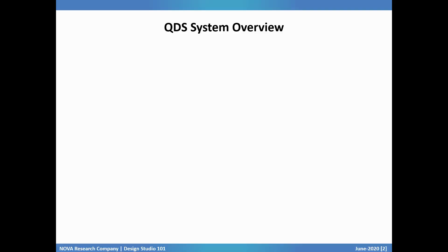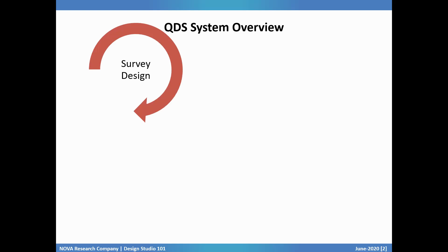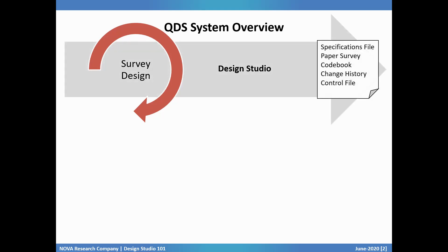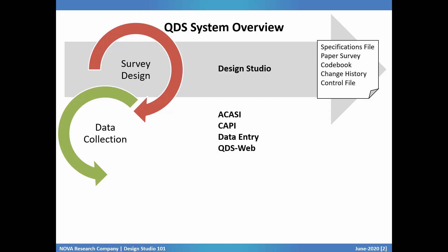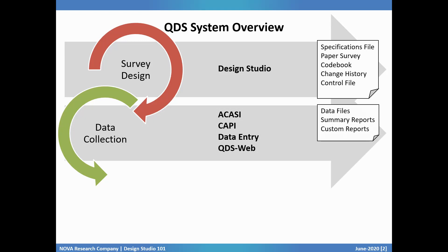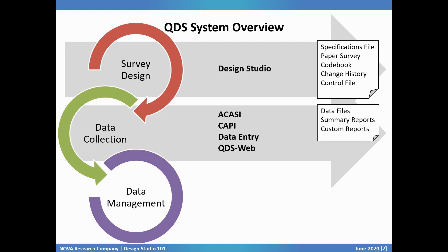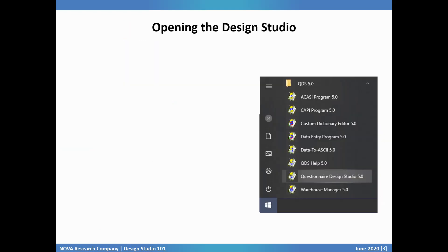First, a brief overview of QDS. QDS is made up of a system of modules. For survey design, you'll use the Design Studio module to program specifications and produce survey documentation. There are several data collection modules including ACASI, CAPI, Data Entry, and QDS Web. All of these are used to administer surveys and produce data files and optional reports. Data management is conducted with the Warehouse Manager module, and data can be exported from there to many different software formats. This tutorial video will just focus on the Design Studio.